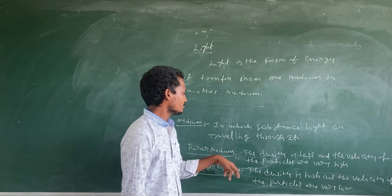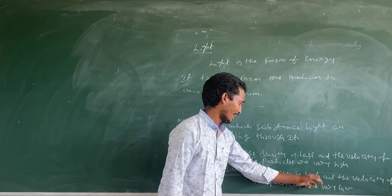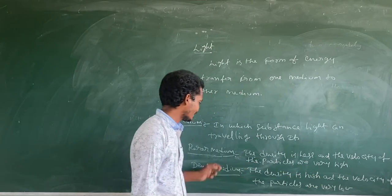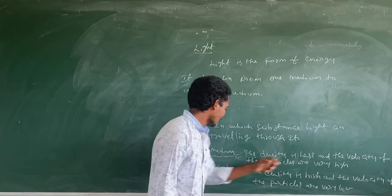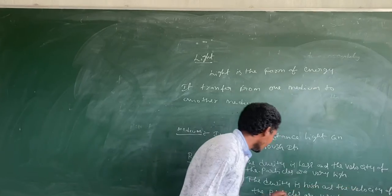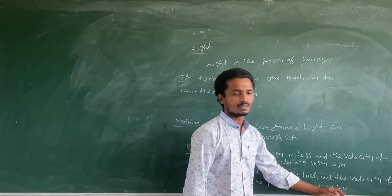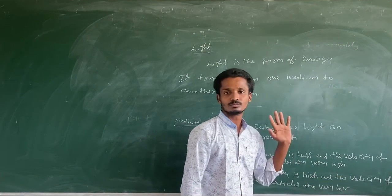Denser medium: the density is high. In the denser medium, the velocity of the particles is very low.